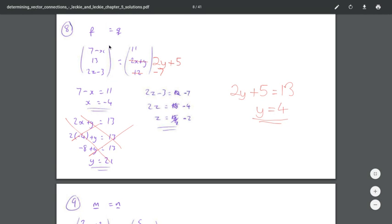So these two vectors are equal, vectors p and q are equal, so the x component, 7 minus x, must equal 11. 13 must equal 2y plus 5, and 2z minus 3 must equal negative 7.